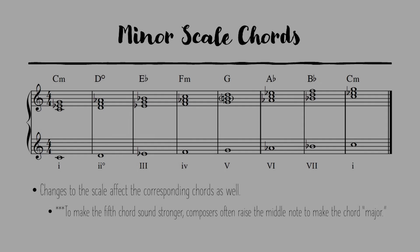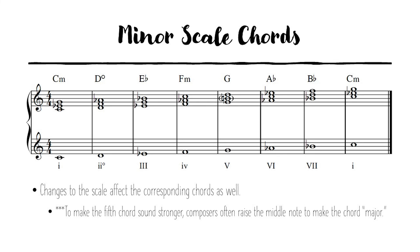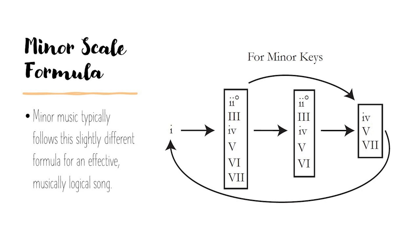The notes of a minor scale are a little bit different than the major scale, which means that the chords built off of those are also going to be a little bit different. The fifth chord of a minor scale tends to be shifted back to the major version, which tends to make the return to our center of gravity — our tonic — sound a little bit stronger. The formula for choosing chords from minor keys is a little bit different than the major one, but if you follow this same type of routine your song will make a certain type of musical logical sense.